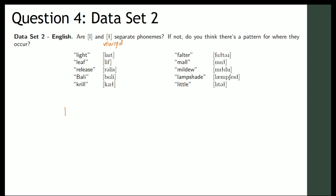Let's make a little chart. And we'll see how far we can get with this chart. So the first one, light, that's at the beginning of a word, before I. Leaf, beginning of the word before E. Release, between a schwa and an E. Bali, it's between an A and an E. Krill has this one at the end of a word. Before an E. Falter has it between an A and a T. Mal has it at the end of a word. Mildew happens before I and D. Lampshade happens at the beginning of a word. And little, there's one L at the beginning of the word and the velar one is at the end of the word.